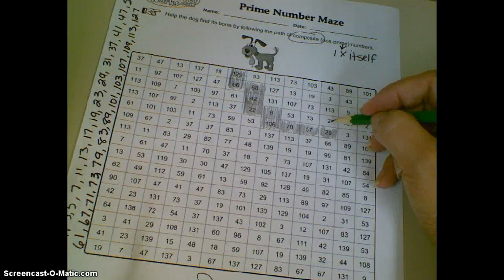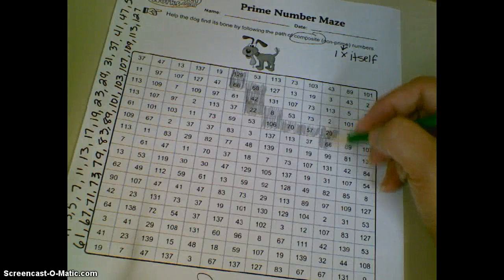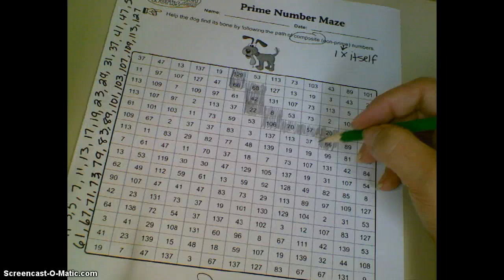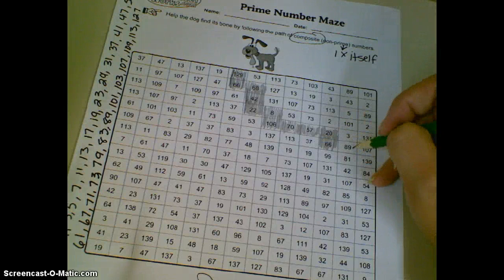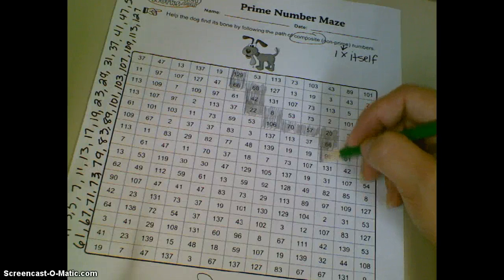And then we can keep on going. Here's our 20. And here's an even number. Is 2 prime, though? Yep, remember, that's the only even prime number, so it must be 66. 37 is prime, 89 is prime.